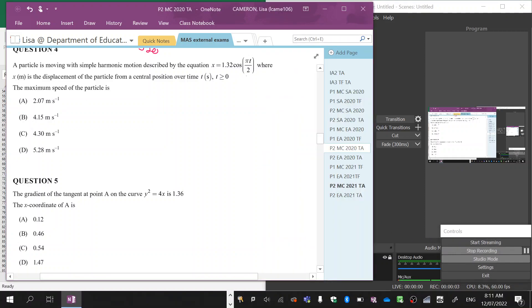Okay, so this question here. A particle is moving with simple harmonic motion described by this, so that is displacement. The particle from its central position over time, so time has to be bigger than zero, what is the maximum speed?